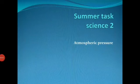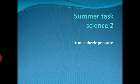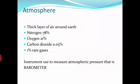Bismillah ar-Rahman ar-Rahim, Assalamu alaikum. Summer task science, and we are going to start the last topic of unit 7, that is atmospheric pressure. What is atmosphere? Air around Earth makes atmosphere, which contains 78% nitrogen, 21% oxygen, and 0.03% carbon dioxide. Other real gases, dust particles, and raindrops also make some contribution.